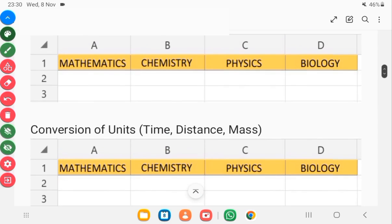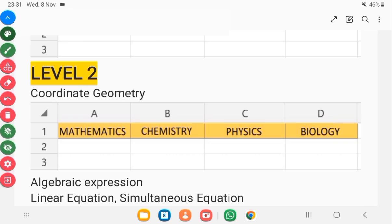Conversion of units, specifically time, distance, and mass, is very important. In mathematics you will need it, in chemistry you need it, and in physics as well. In level one, I mentioned plane geometry.